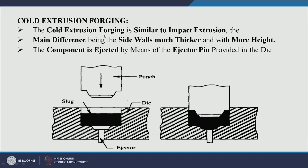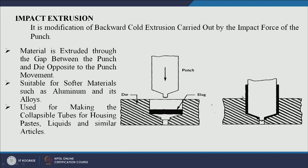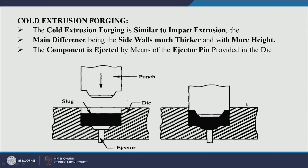Cold extrusion forging is similar to impact extrusion; the main difference is that the side walls are much thicker. In impact extrusion the walls are thin and the height is more, while in cold extrusion forging the wall thickness is large and the height is less.